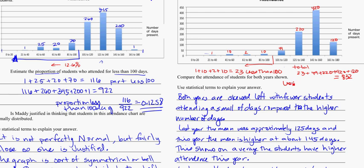so less than 100 in proportion is going to be 23 out of 832, and that's roughly 0.0276. So one comparison there is that this is approximately 3%.